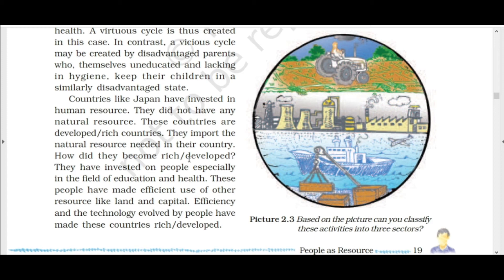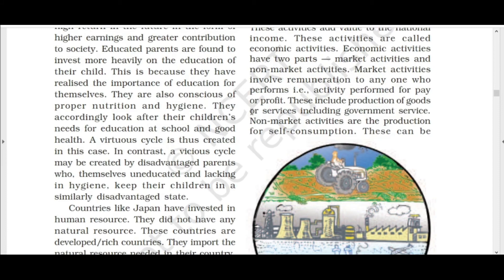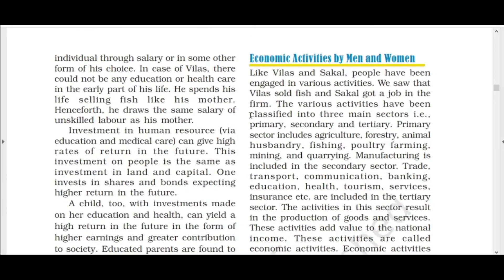Now let us look at economic activities by men and women. Like Vilas and Sakal, people are engaged in various activities. Vilas sold fish; Sakal got a job in a firm. These various activities are divided into three main sectors: primary, secondary, and tertiary. The primary sector includes agriculture, forestry, animal husbandry, fishing, poultry farming, and mining.